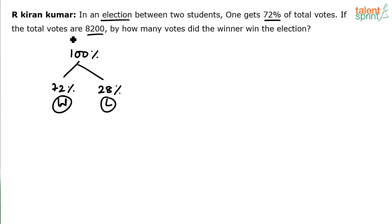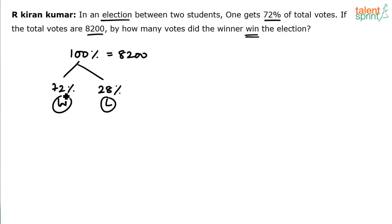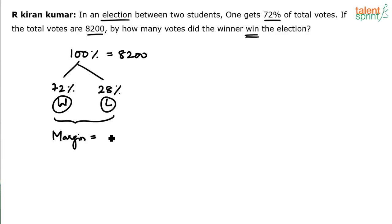The total votes here is 8,200, so this 100% is equal to 8,200. The question asks: by how many votes did the winner win the election? The question doesn't say how many votes did the winner get — that would be 72%. It's asking by how many votes did he win, meaning the margin.